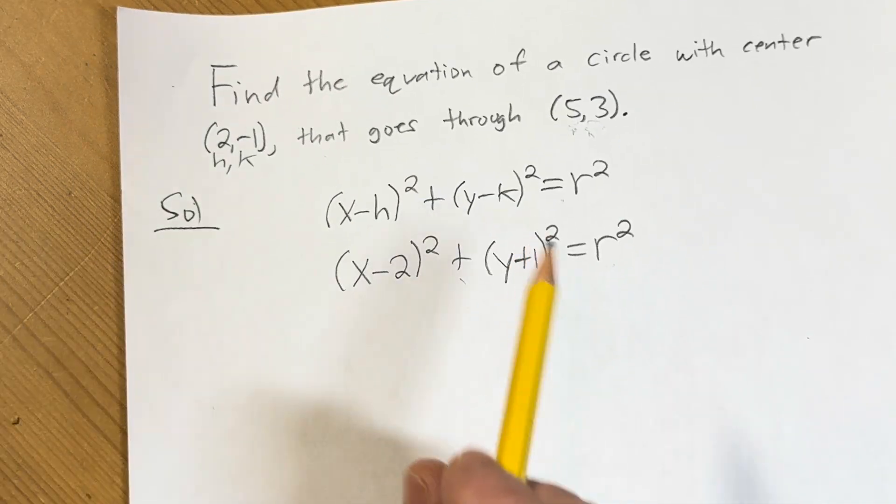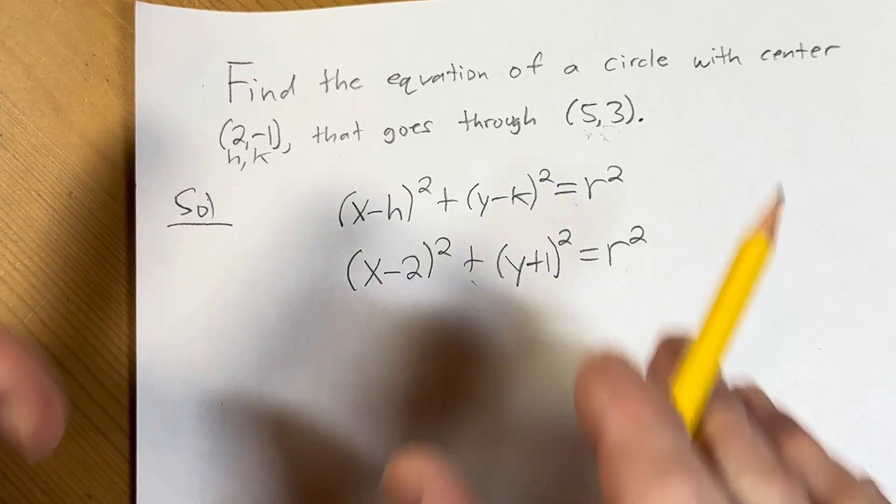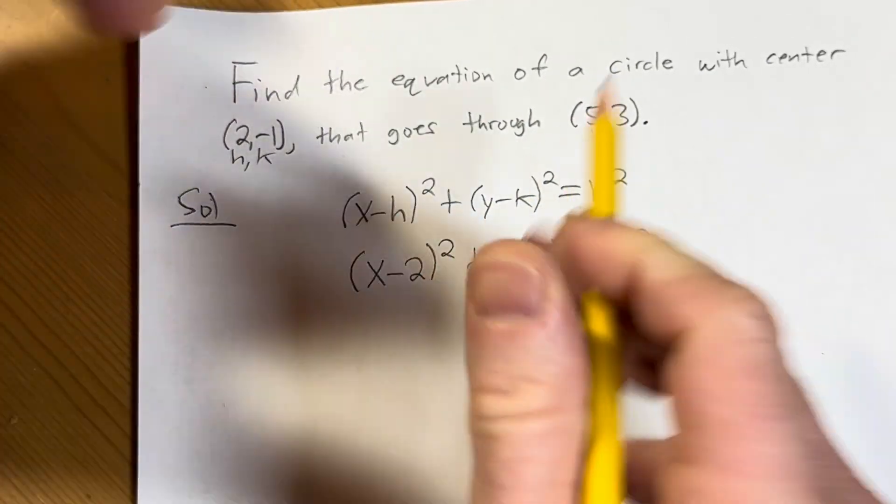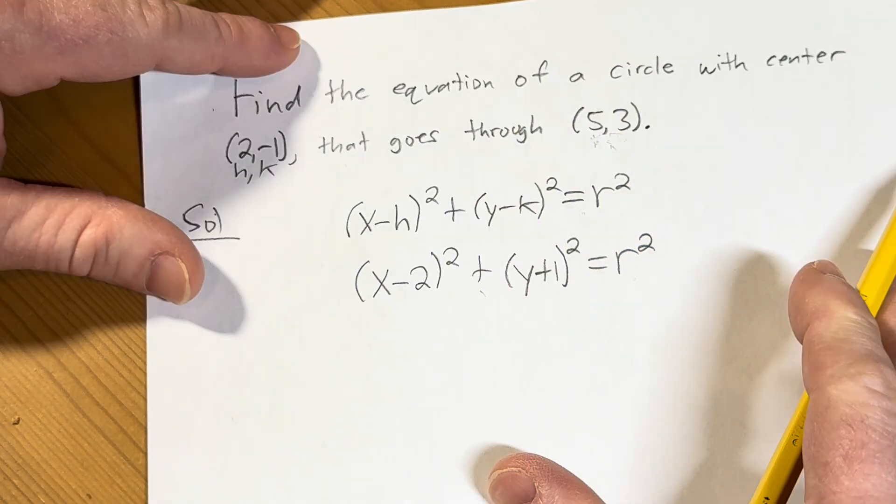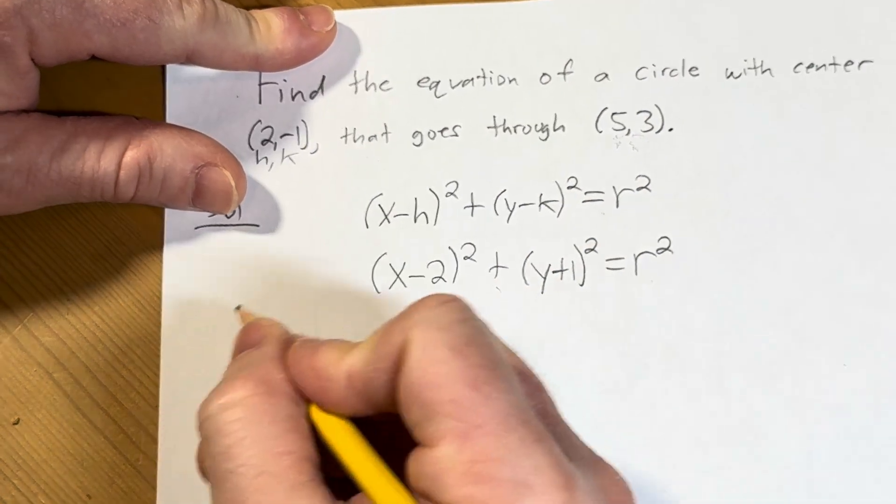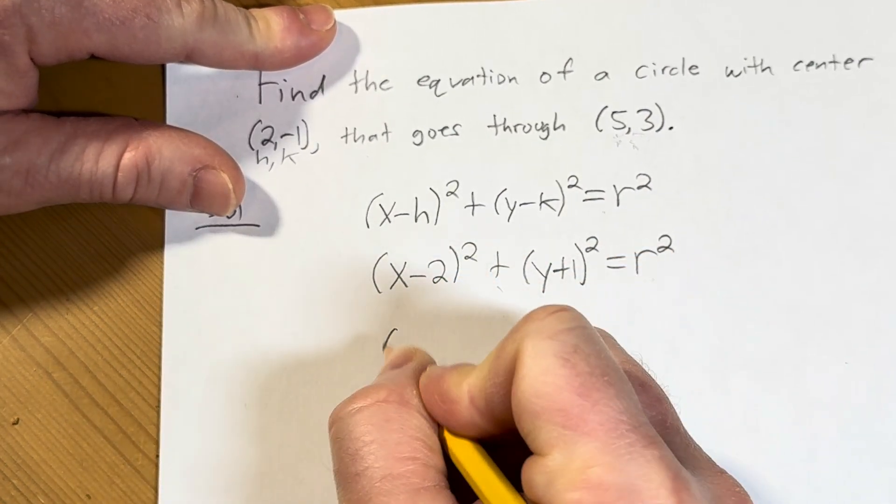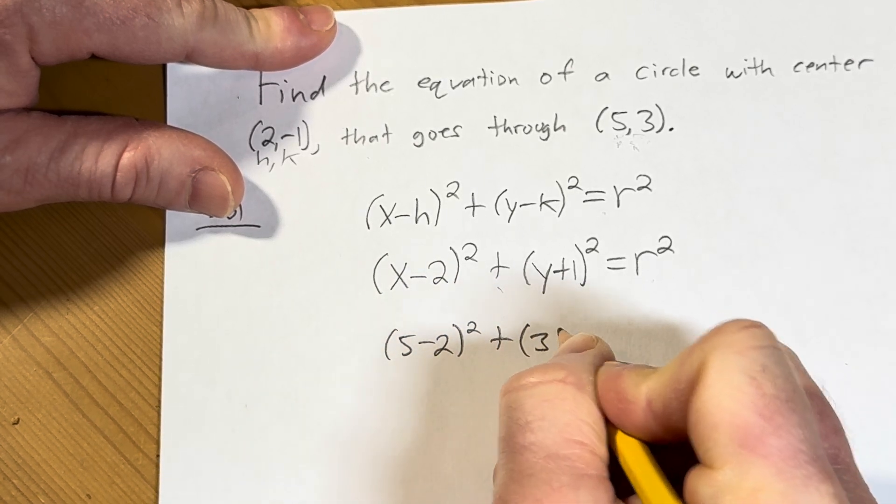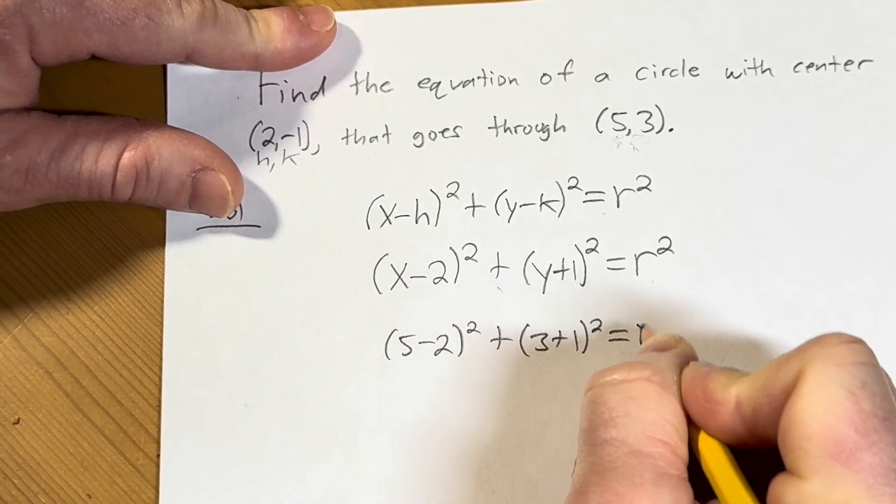Okay, now that I've said that like twice and you definitely get it, I hope, let's go ahead and plug in that 5 and that 3 into the equation for x and y and solve for the radius, which is r. So doing that, we're just going to get (5 - 2)² plus (3 + 1)² equals r².